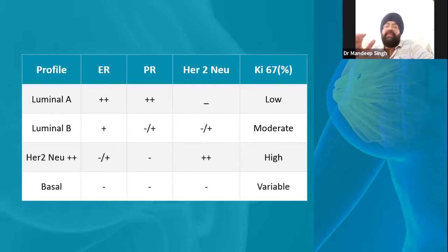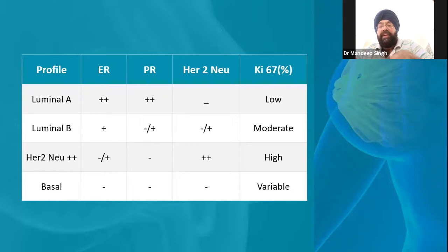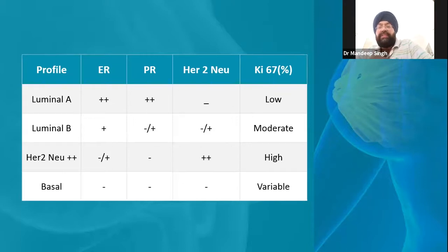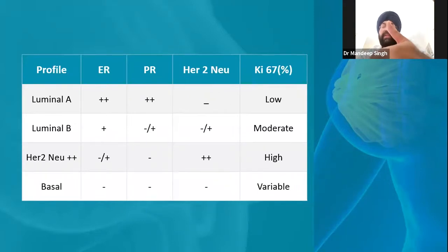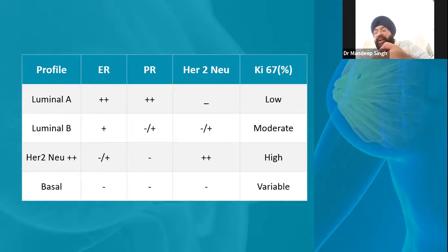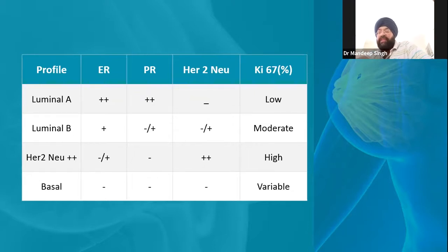If our biopsy report shows high ER positivity, high PR positivity — say 7/8 or 80% — HER2 at 1-plus, and KI-67 on the lower side — less than 20%, around 5–15% — we categorize this as Luminal A. When ER is positive and PR negative, or ER/PR positivity is around 3–5 out of 8 or 20–30%, and HER2 is sometimes 2-plus, HER2 is basically expressed as 1-plus, 2-plus, and 3-plus. 1-plus means negative; 2-plus means uncertain; 3-plus means definitely positive.